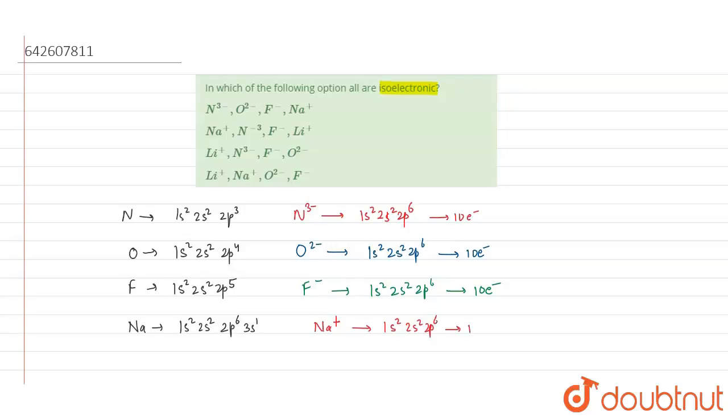This again has 10 electrons. So as we can see, all the options have 10 electrons, which are the same. So these are isoelectronic.